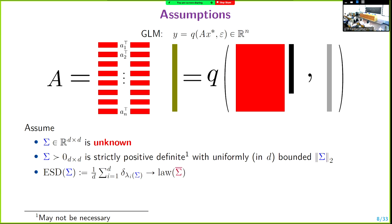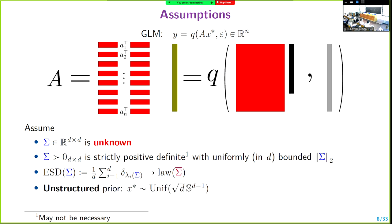Sigma is strictly positive definite, and its norm is uniformly bounded. The empirical spectral distribution of sigma — namely the empirical distribution of the eigenvalues, the histogram of the eigenvalues of sigma — converges to the law of a certain scalar random variable sigma-bar. This will play a crucial role. Also, let's say the prior distribution is unstructured — it's just uniform. It's an interesting question what happens if the prior is structured, for example plus-minus one, but we didn't look into that.